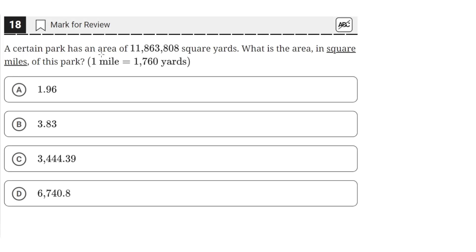A certain park has an area of 11,863,808 square yards. What is the area in square miles of this park? One mile is equal to 1,760 yards.